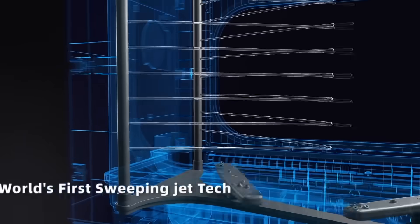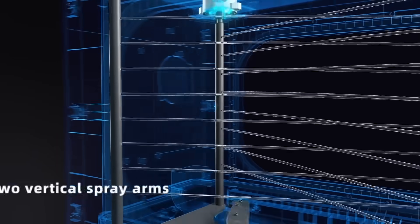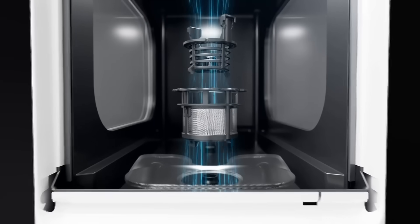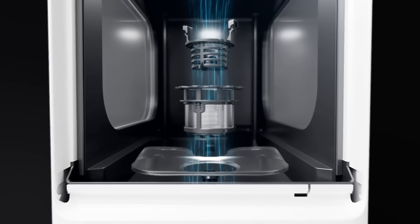R1 is equipped with the world's first sweeping jet technology to clean every corner through 32 high-pressure water jets. The triple filtration system can effectively discharge food residues.